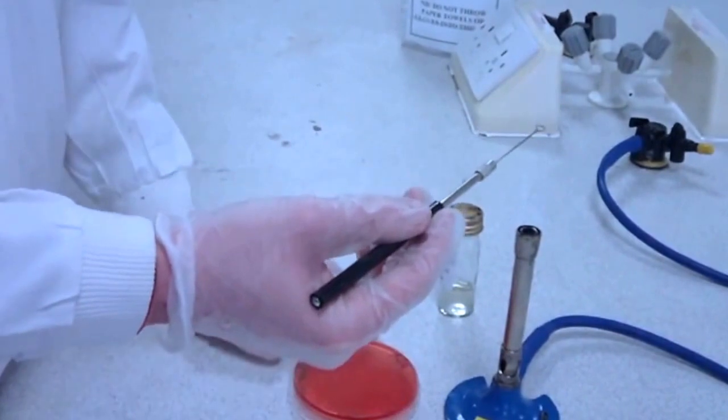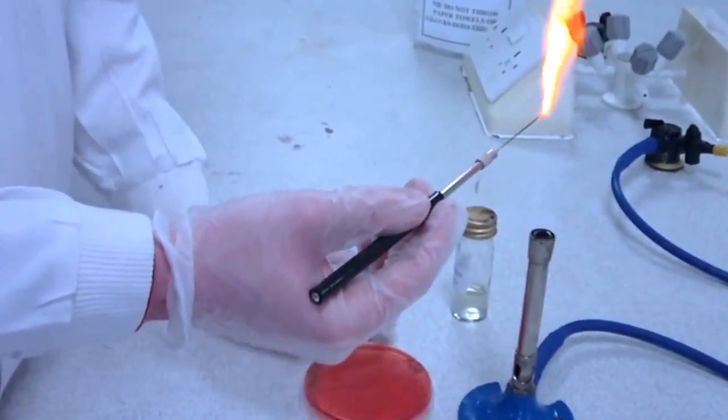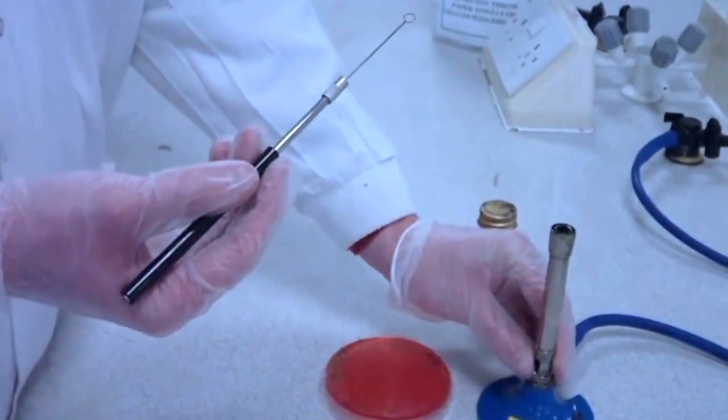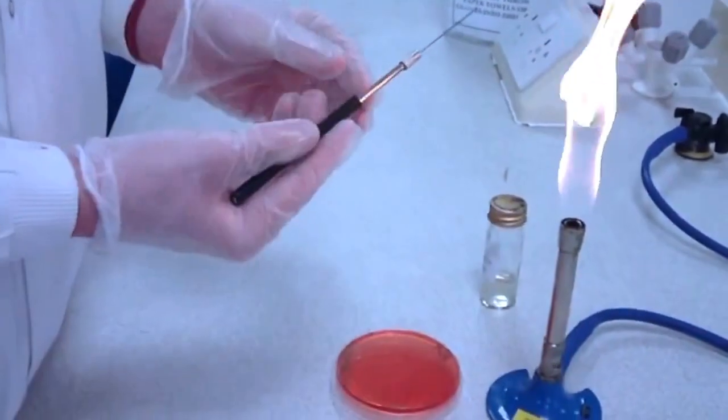Reflame the loop to sterilize before putting away. Turn the Bunsen burner flame back to safety and leave the agar plates on the side to be collected.